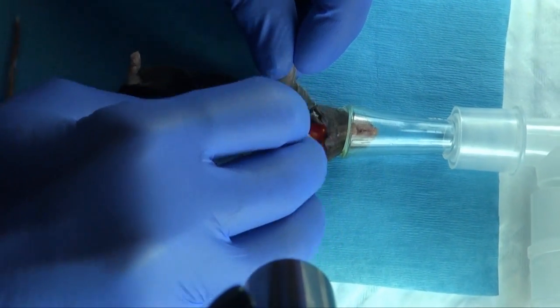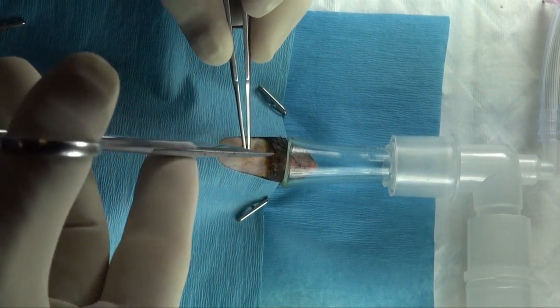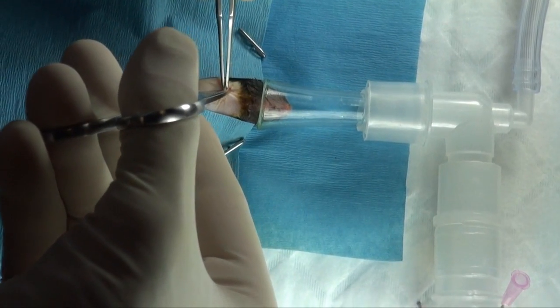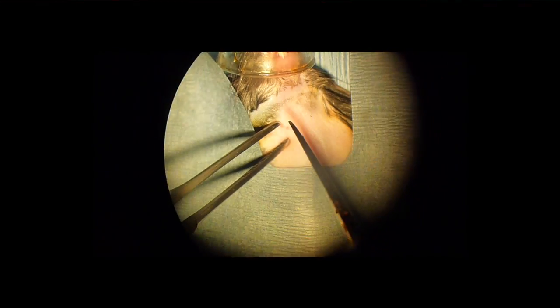Place a sterile drape over the surgical site. Identify the right external jugular as a darker area to the right of the midline and sharply incise the skin and soft tissue of the neck above it.